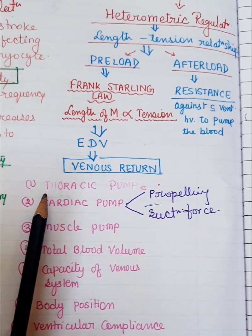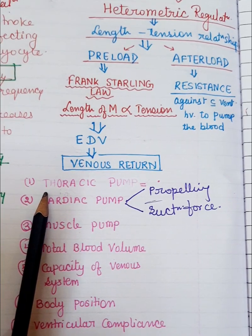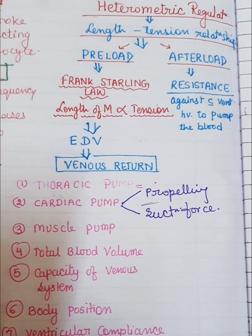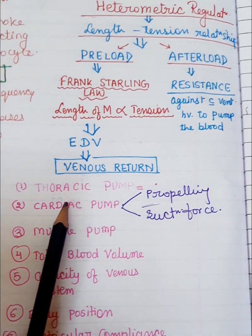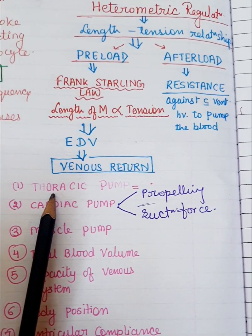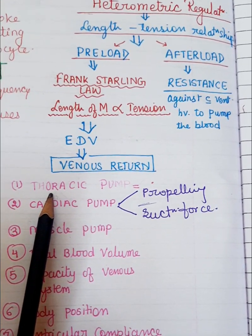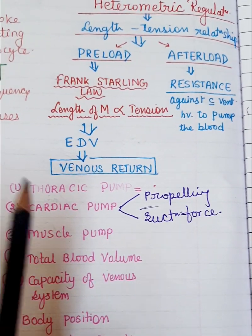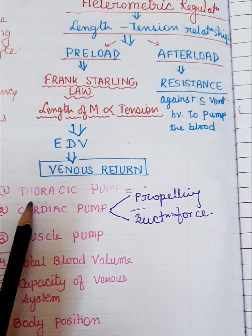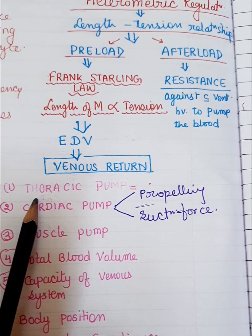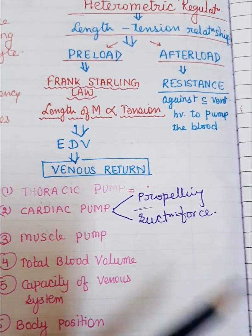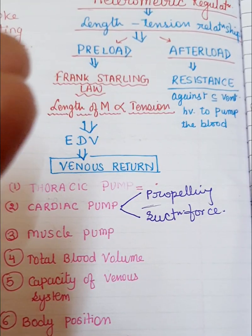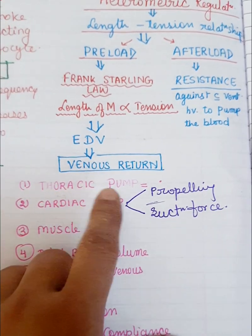The thoracic pump: during inspiration, intrathoracic pressure decreases because of descent of the diaphragm and expansion of the ribs, creating more space within the thoracic cavity. This reduction in pressure acts as a suction pump and sucks venous blood from the abdominal cavity. Additionally, descent of the diaphragm increases intra-abdominal pressure, squeezing blood out of the abdomen upward toward the thoracic cavity.